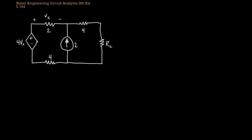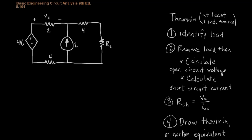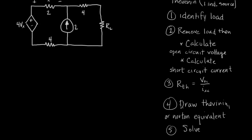So what are our steps when we're doing Thevenin with dependent and independent sources? We'll identify our load, we'll remove the load and then calculate open circuit voltage, short circuit current. This will give us our Thevenin and then we'll use our Thevenin to draw the Norton equivalent and then we'll solve.